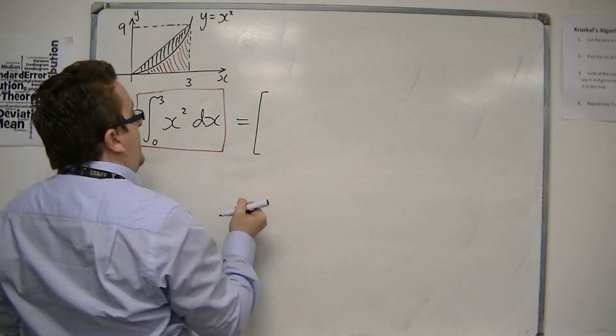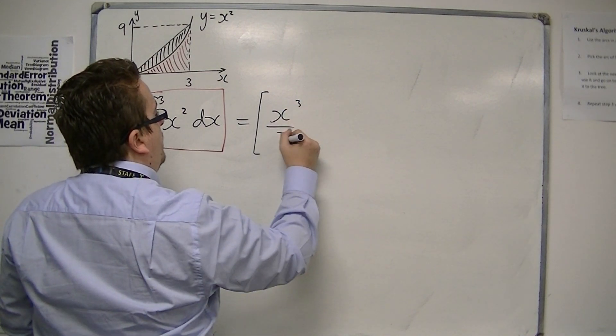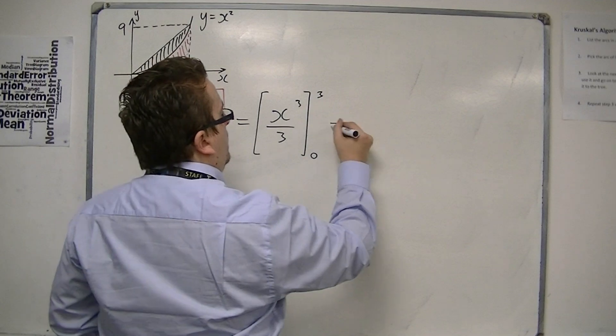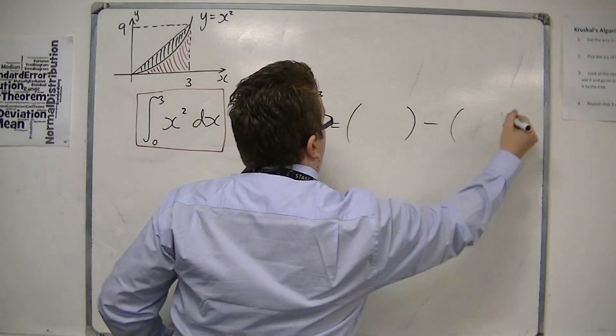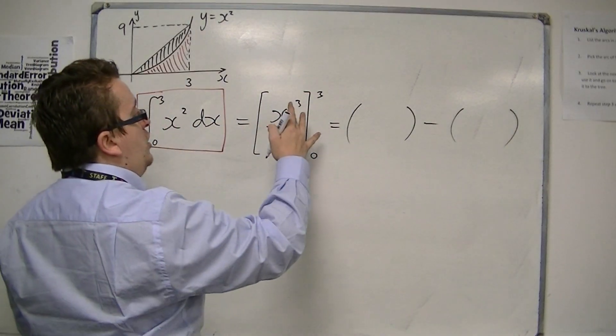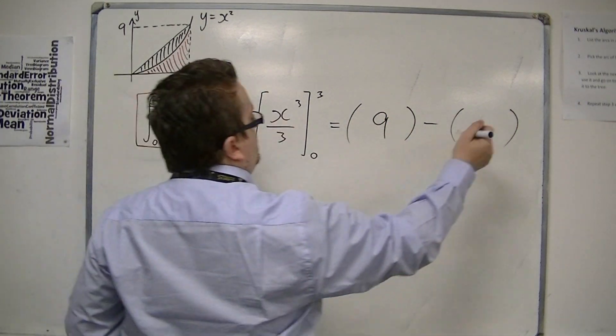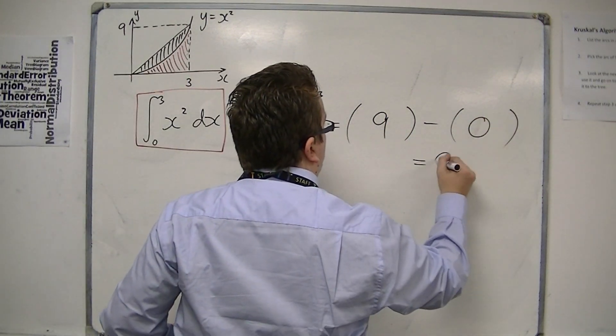So, if I integrate, I get x cubed over 3, and I'm evaluating it between 0 and 3. Substituting into the brackets, we get 3 cubed is 27, divided by 3 is 9, and then I substitute in 0, and we're going to get 0.